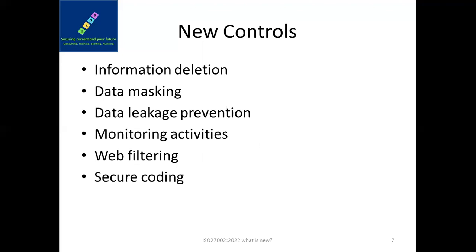New controls include information deletion and data masking. For information deletion — who can delete the information, is it based on the aging of information or on request — regardless, it needs to be approved. It could be source code, data, or hardware coming in as a configurable item, and it needs to go through the Change Advisory Board. Data masking is part of tokenization, and with the growth of cloud security as part of ISO 27002, data masking has become very important — parts of the data are masked so that an attacker looking at data at rest, in transit, or in use cannot see the complete data.